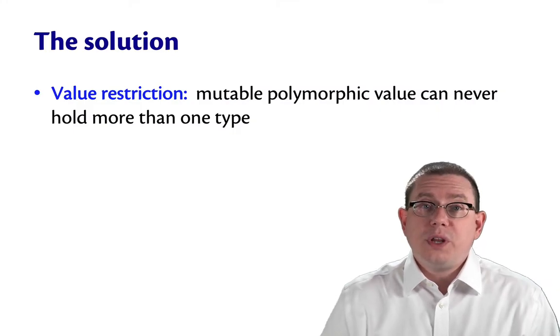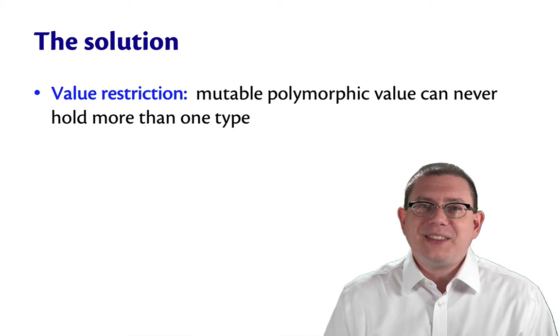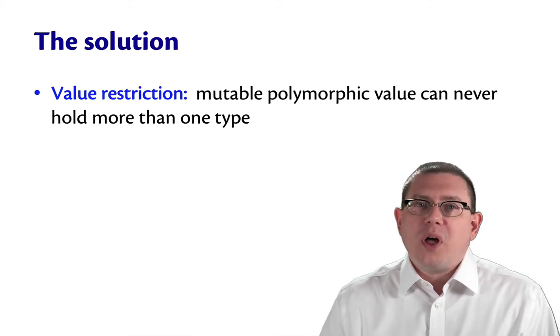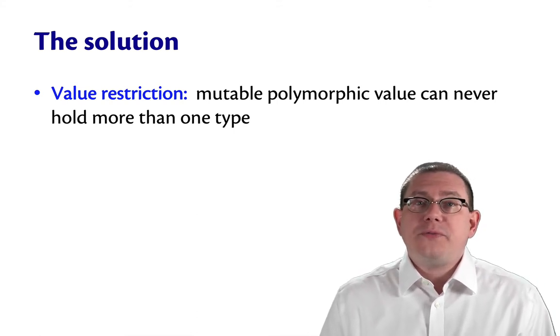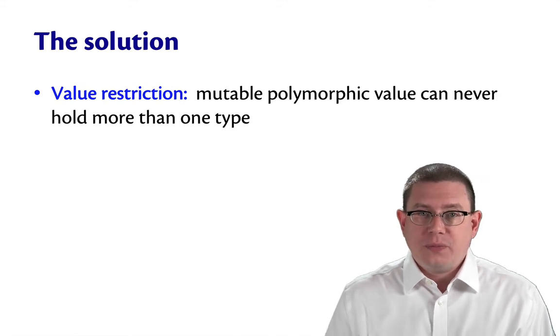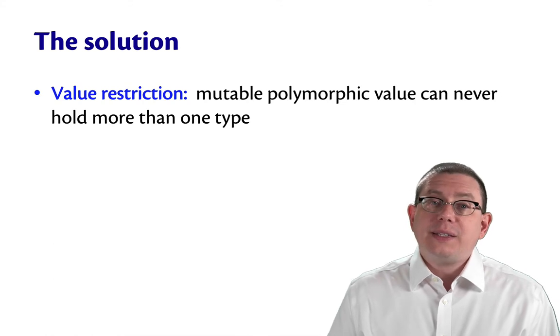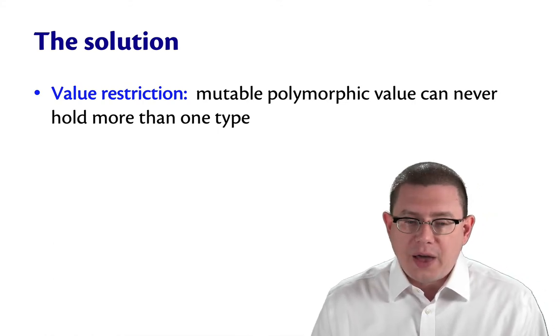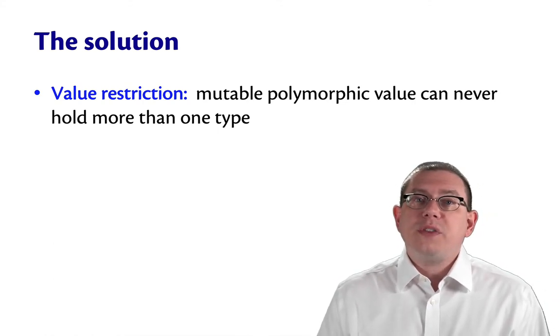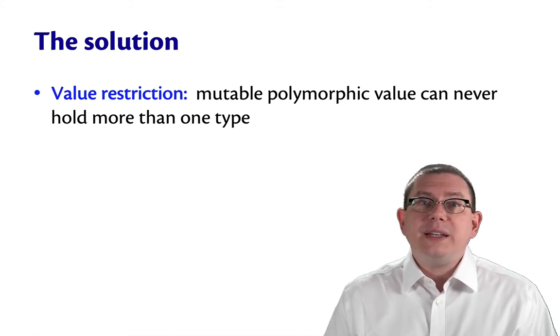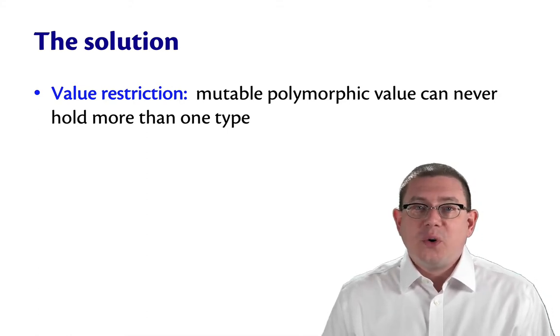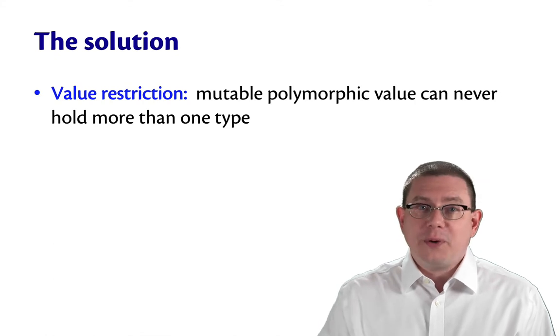The solution that OCaml is using here to prevent that kind of explosion from applying successor to a boolean is something called the value restriction. The value restriction is something that shows up in many languages. And it says that a mutable polymorphic value can never hold more than one type. You can only stick an int into it, or bool into it, or an int arrow int function, or whatever it might be.